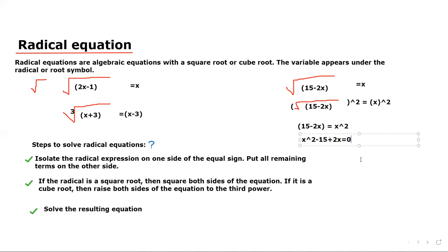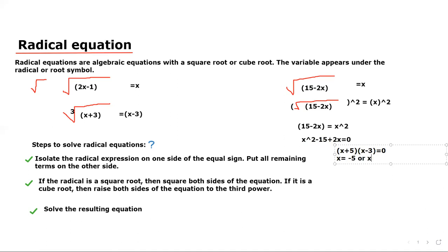From this equation, which can be written as x squared plus 2x minus 15 equals 0. By factoring this equation we get x plus 5 times x minus 3 equals 0, which gives the solution x equals negative 5 or x equals 3.